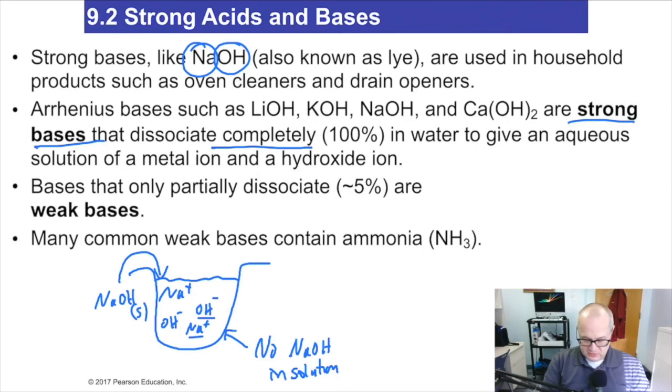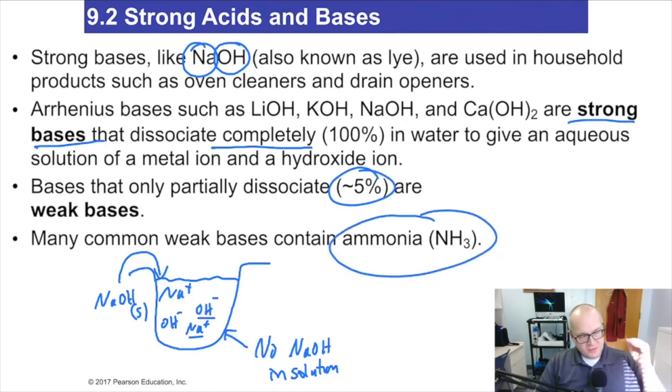Again, a weak base dissociates only about 5%, and ammonia NH3. Basically, if you want to know if you have a weak base, look for nitrogen. Nitrogen is kind of a giveaway that you have a weak base. NH3 ammonia is a good example of that, but there are thousands of other ones. Look for nitrogen. Most often that nitrogen will be basic, and it'll be weakly basic too, not strong.